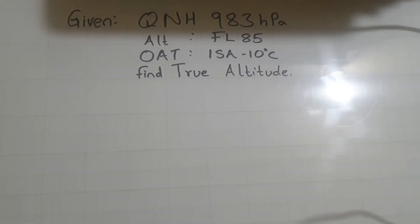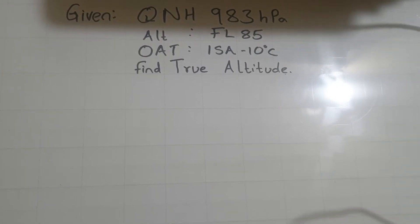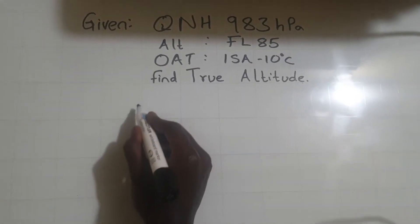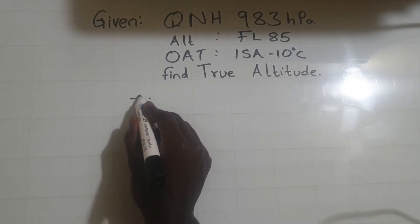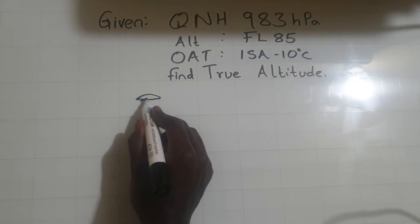So the first thing when you get this, you ask what is the true altitude? The first thing you need to do is to draw. And how do you draw? You draw from where your aircraft is. This is your aircraft. So your aircraft is there.